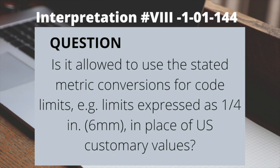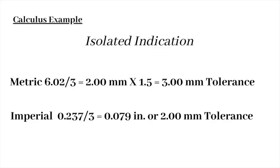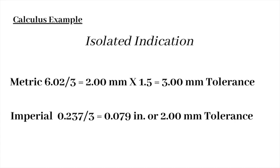We know this from Interpretation 8-1-01-144: is it allowed to use the stated metric conversion for code limits expressed as 1/4 inch or 6 millimeters in place of U.S. customary values? The reply was no — see units in Section 8, Division 1. To show the difference between the two, the tolerance for metric is 3 millimeters and the tolerance for imperial is 0.079 inches. Converting 0.079 inch to millimeters equals a 2-millimeter tolerance, showing the 3-millimeter metric tolerance is greater than the imperial tolerance.